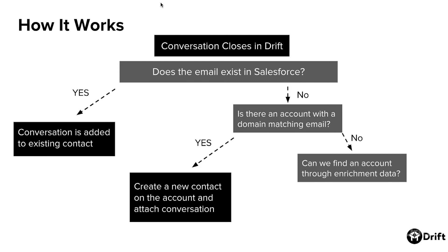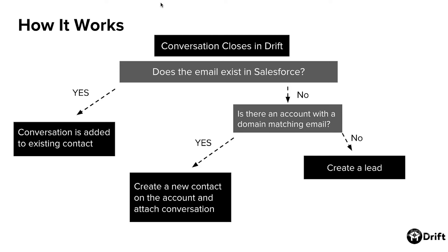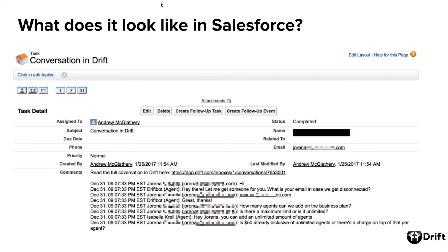If a matching domain is found, we'll create a new contact on the account and attach the conversation. If not, we'll see if we can find an account through enrichment data. And if we still can't find the account with the matching data, we'll then create a new lead.